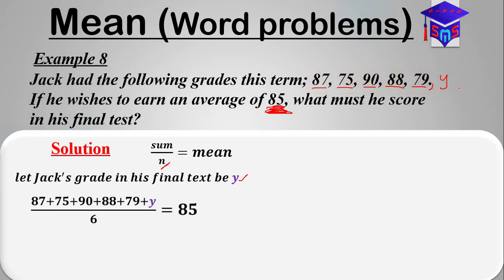So we see that the sum of all the grades—that is 87 plus 75 plus 90 plus 88 plus 79 plus y, which is his score in the final test—all over six, which is the number of tests taken by Jack, should be equal to the average score that he wants to obtain.